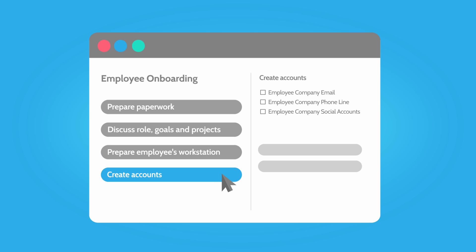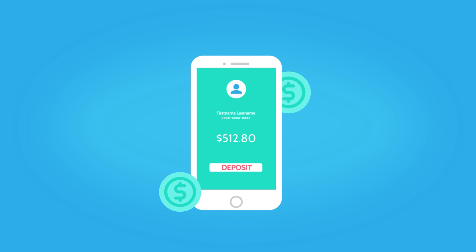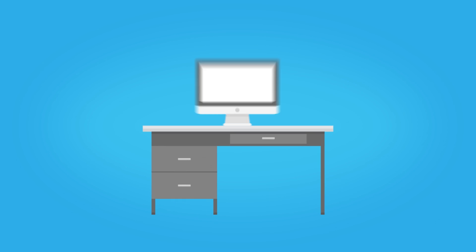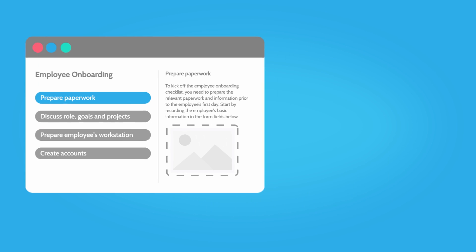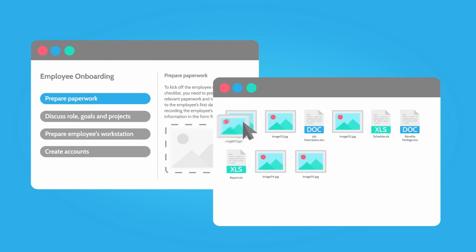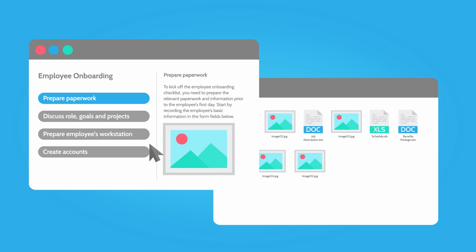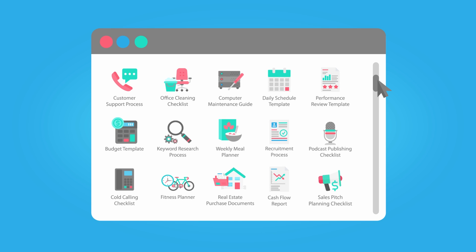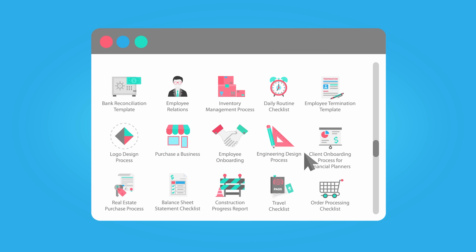For example, if our process was employee onboarding, the template would be a list of tasks for how to onboard an employee. It could include tasks like giving direct deposit details, getting a building keycard, and getting their computer set up. While it's easy to create your own templates with our drag-and-drop editor, we also have a public template library with hundreds of examples ready to use or edit.